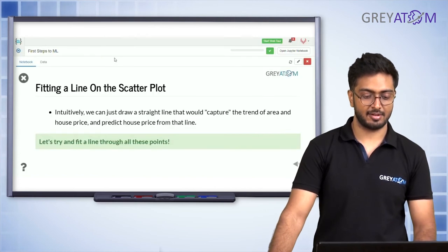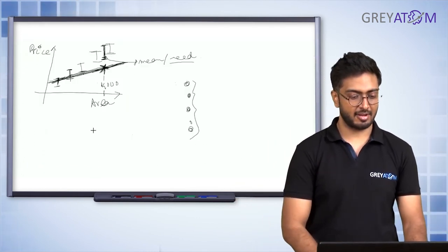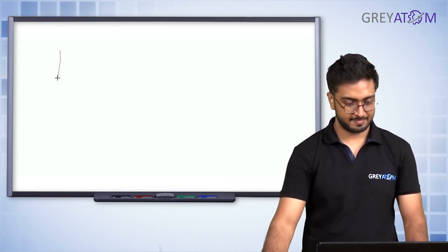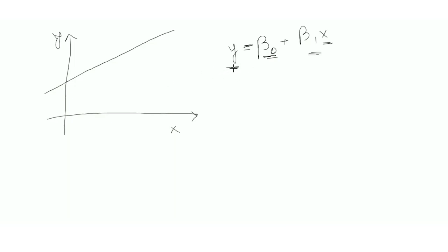To draw a straight line, we now come to the math. A straight line is represented by this equation: y equals beta-naught plus beta-1 times x. Here x is your independent variable, y is your dependent variable, and by saying there's a linear relationship you're simply expressing y = β₀ + β₁x. Beta-naught is basically the value of y when x equals zero.